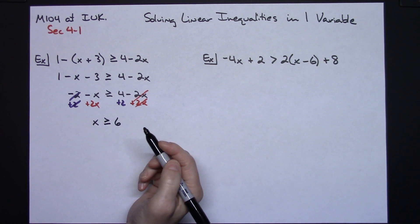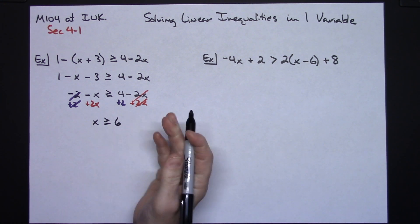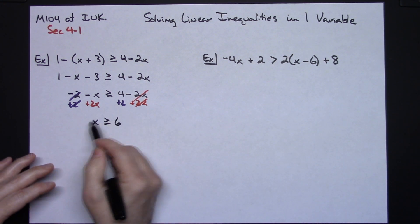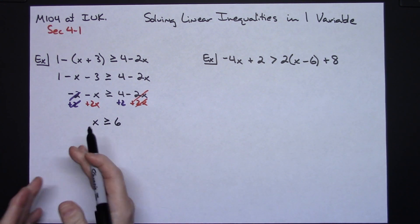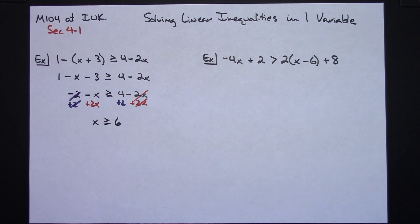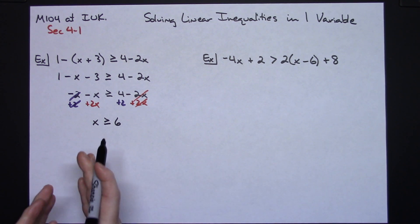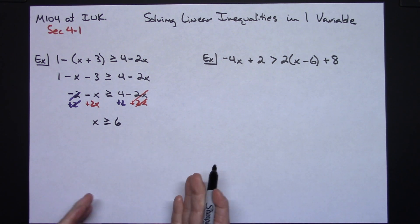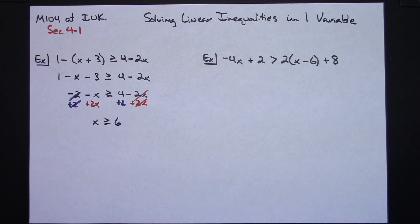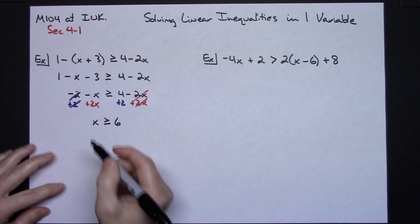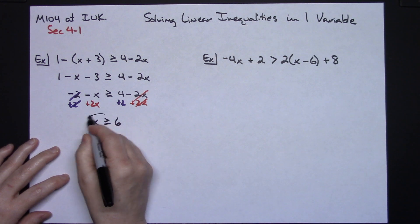Generally in a high school Algebra 1 class you stop right there — maybe you graph it on a number line. We're going to take it from here, graph it on a number line, and then go to interval notation as well.